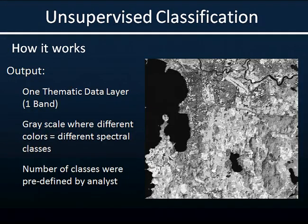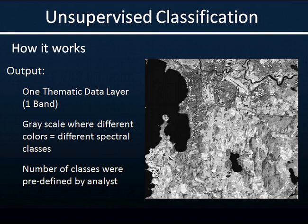What comes out of the ISODATA algorithm is a one-band thematic image. Thematic means each pixel now has a class value instead of a continuous number. You could never have output from an unsupervised classification with a pixel value of 1.2745 — these are just straight integer classes: 1, 2, 3, 4, 5. This single band is usually output in grayscale. Brighter colors represent some surface feature we don't yet know — because this is unsupervised, it's not necessarily true that what comes out brightest in the grayscale was also brightest in the original image. We have to go in and figure out what each shade of gray is telling us.